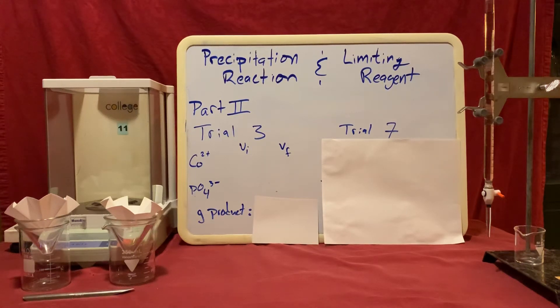In this video we'll be looking at part 2 of the precipitation reaction and limiting reagent lab. In part 2 we collect data from a series of different trials, and in this demonstration we'll be looking specifically at trial 3 and trial 7.